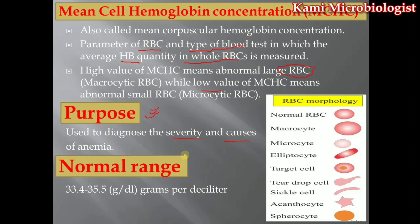The normal range of Mean Cell Hemoglobin Concentration is the same in both male and female: 33.4 to 35.5 grams per deciliter (g/dL). These are the normal ranges for both sexes.